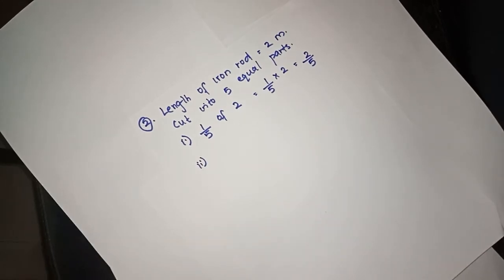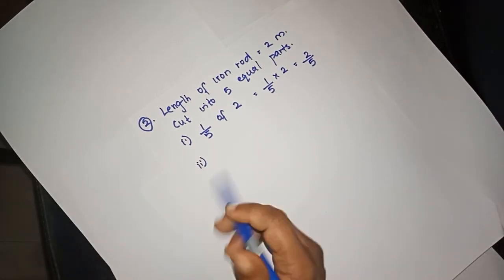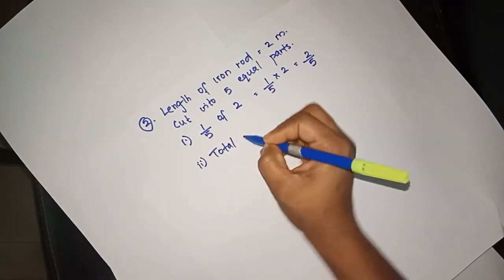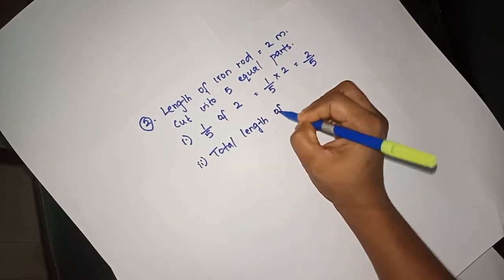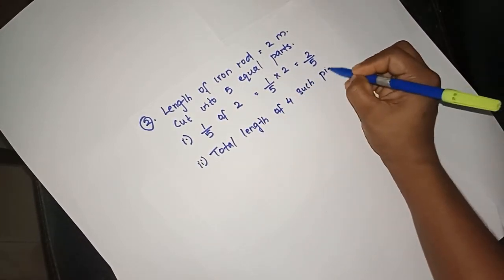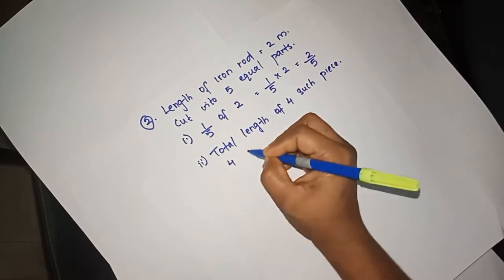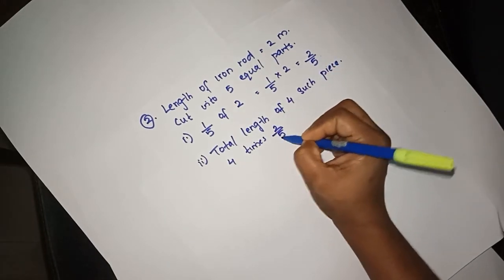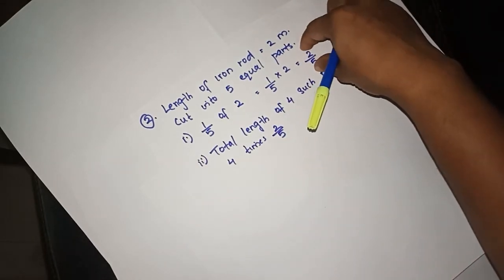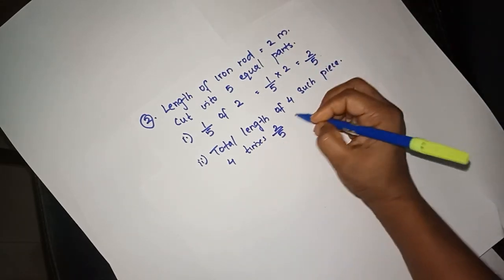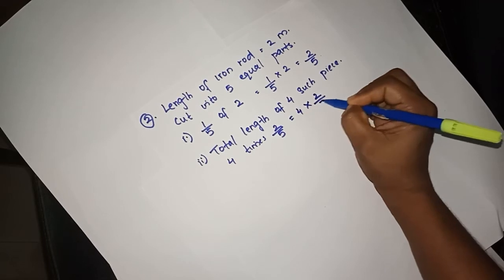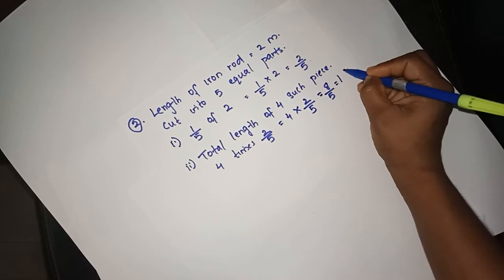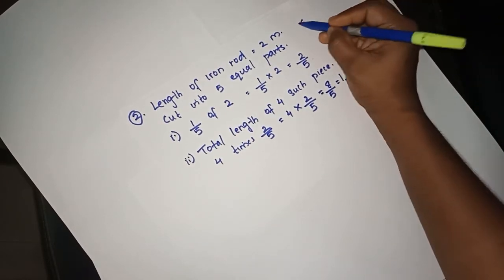What is the length of 4 such pieces? The total length of 4 such pieces: 4 times 2/5. One piece equals 2/5, so 4 is equal to 4 times 2/5, which equals 8/5.